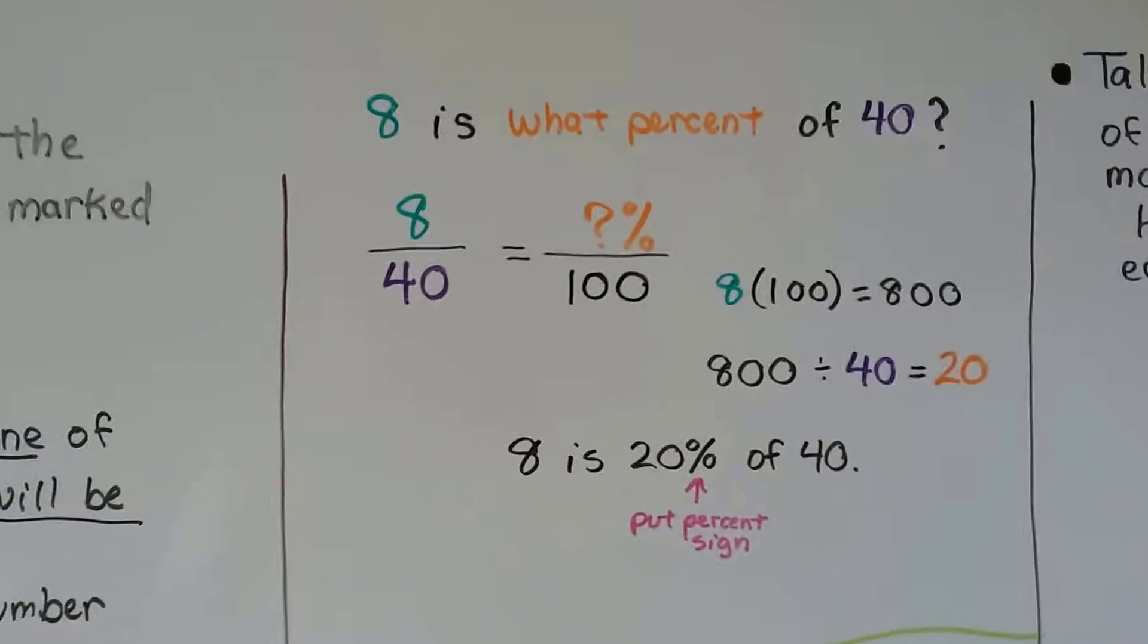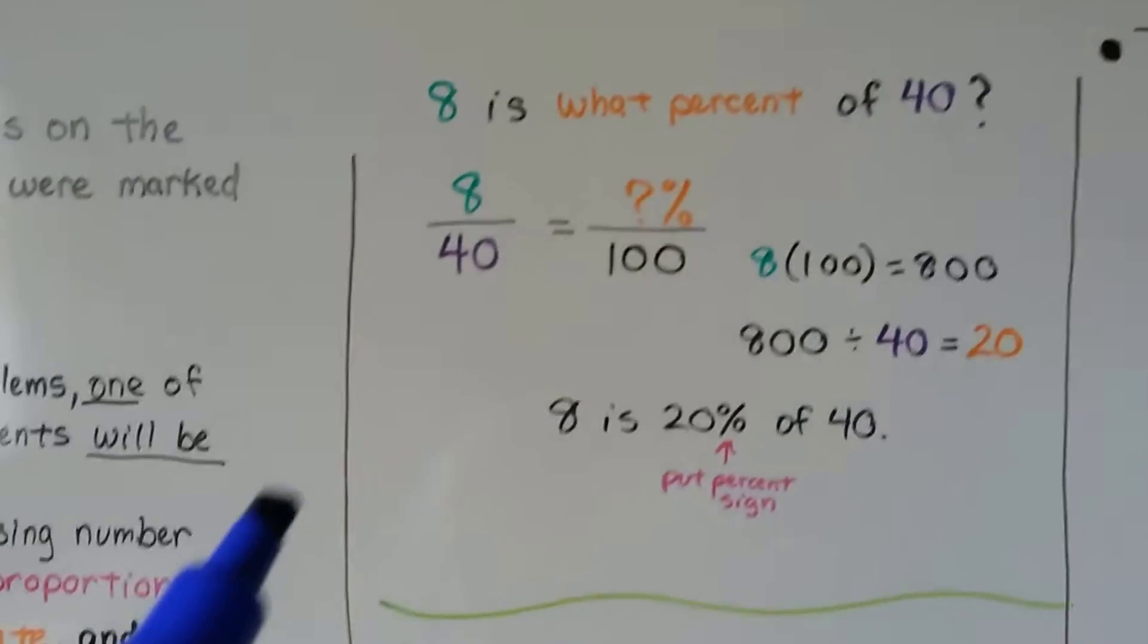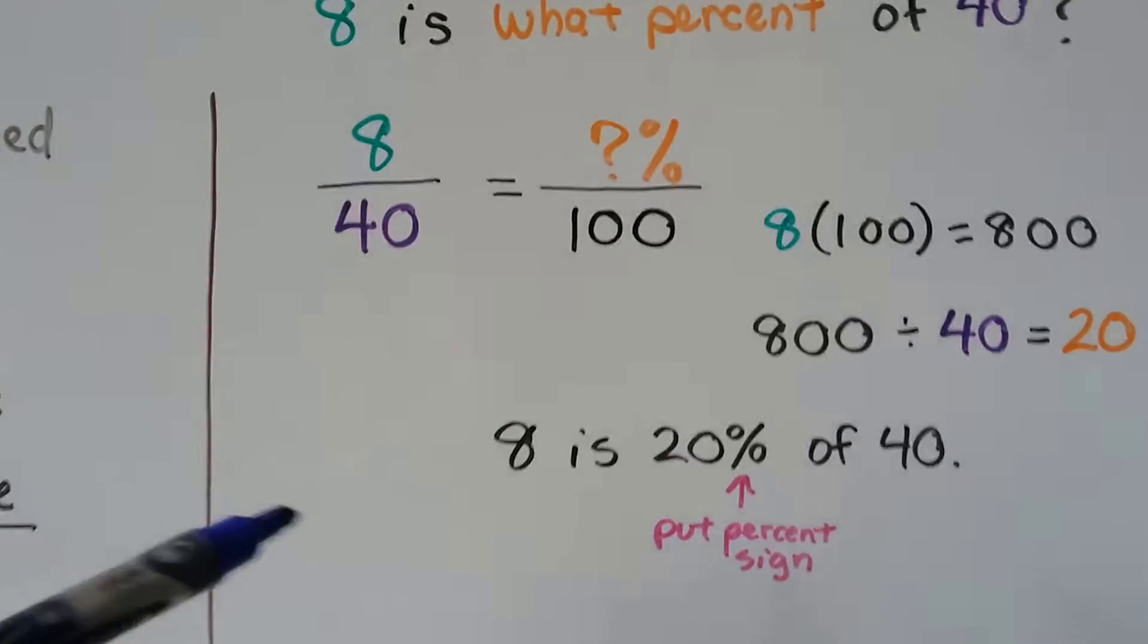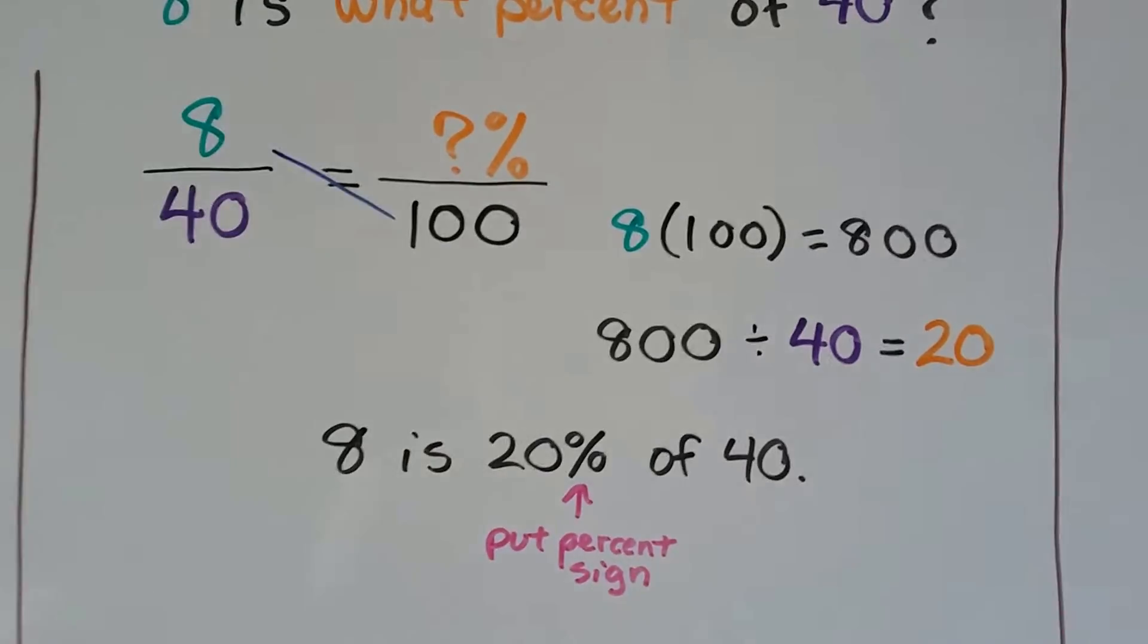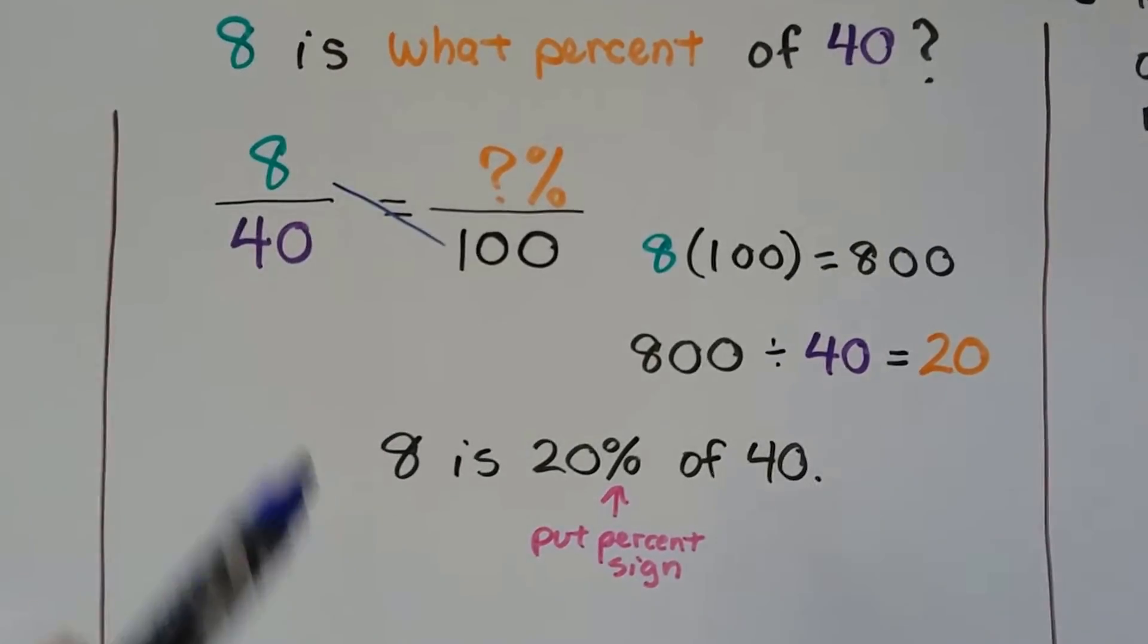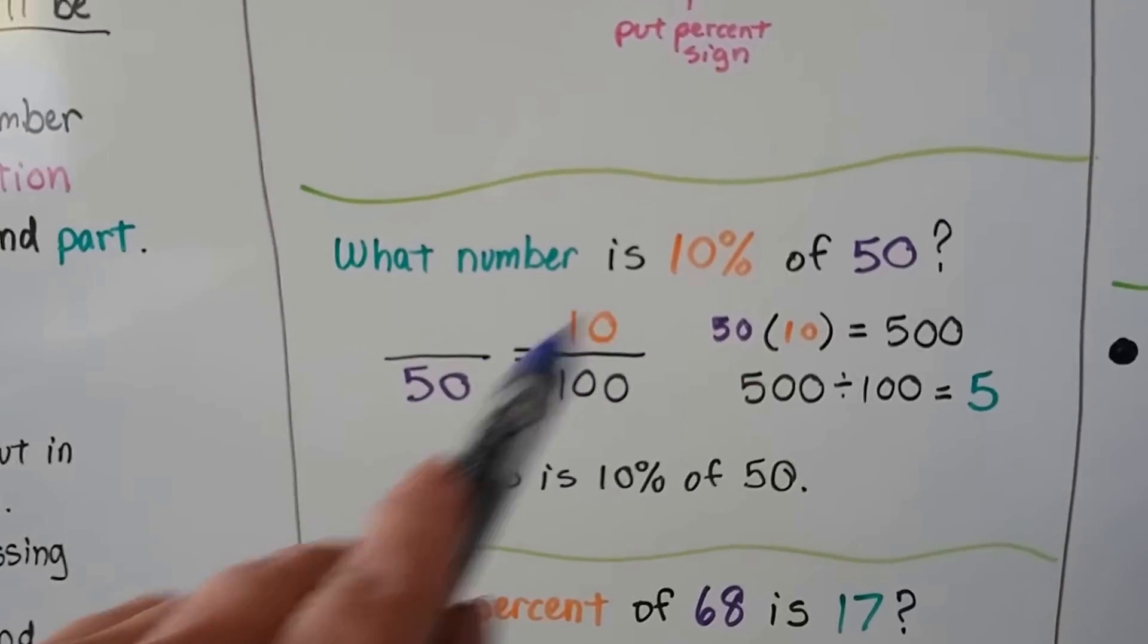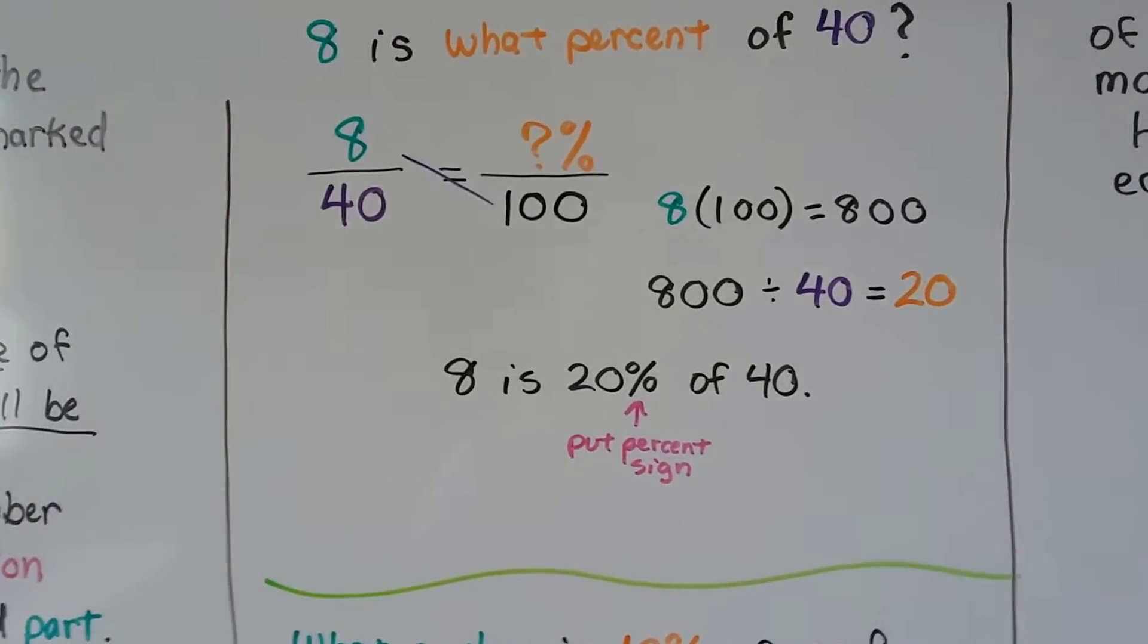Let's try another one. Because what happens with these is they word them differently, or another part is missing. Now it says 8 is what percent of 40. So now the percent's missing. Here's our part. Here's our base. Our percentage is missing over 100. So we do our cross multiplication. 8 times 100 is 800, and we divide it by the third number, 40. We get a 20. We add a percent sign to it. 8 is 20% of 40. So whatever the remaining number is, that's the one that's going to be the divisor. You cross multiply the ones that are across from each other that are there and divide by the remaining one.